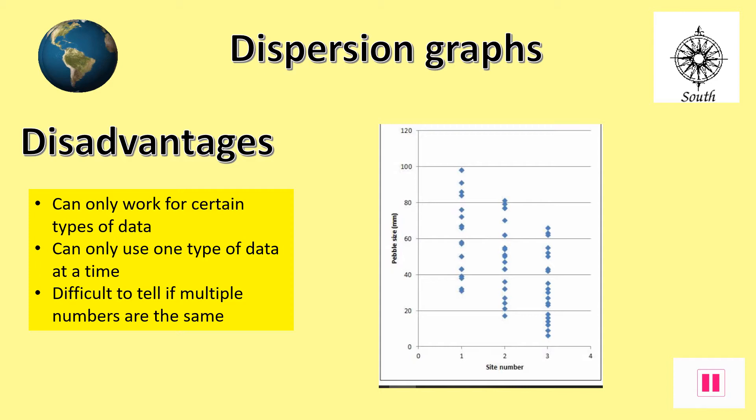There are, however, some disadvantages with dispersion graphs. They only work with certain types of data and can only use one type of data at a time. Where multiple values have the same value, it is really hard to tell. Pause the slide and note down the disadvantages of using dispersion graphs.